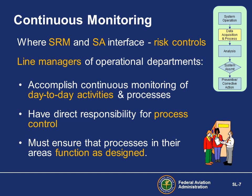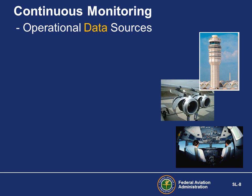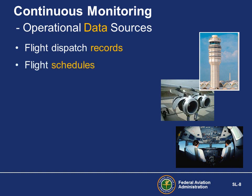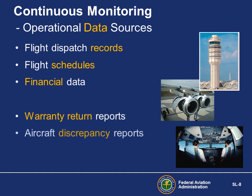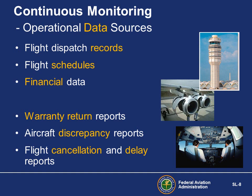Why does line management continuously monitor operational data? To assess conformity with risk controls when implemented in the operational environment, to measure the effectiveness of safety risk controls, to assess system performance, and to identify hazards. The bottom line is to first look for business purposes, then identify the information sources that an organization is already collecting. For example, a check and balance can be gained by using pay records to determine whether a control was used — if there was an NEL item not to dispatch an aircraft without two pilots, were two pilots paid for the flight?